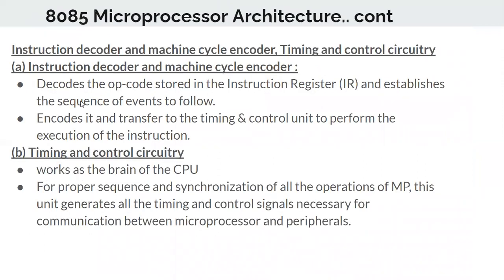The next topic is the instruction decoder and machine cycle encoder, along with the timing and control circuitry. The instruction decoder decodes the instruction — for example, whether it is moving data from one register to another, or performing addition or subtraction. It identifies what the instruction means so the ALU can perform the respective operation. It decodes the opcode stored in the instruction register and establishes the sequence of events to follow.